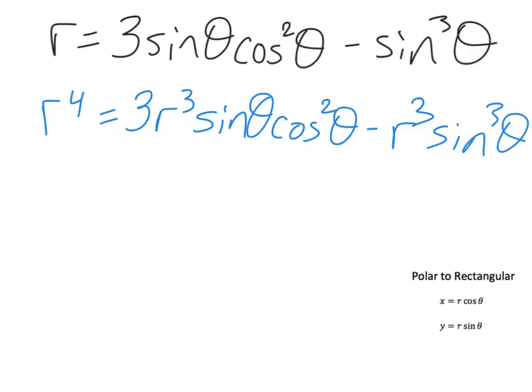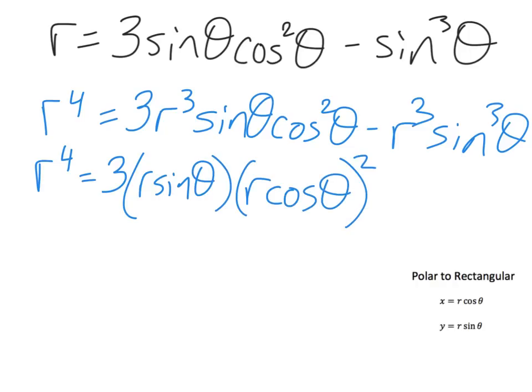So I'm going to multiply every term by r cubed, which gives me r to the fourth is equal to 3 r cubed sine theta cosine squared theta minus r cubed sine sine theta. So rearranging this, I have 3 times r sine times, this becomes an r cosine where the whole thing is getting squared, and this is an r sine where the whole thing is getting cubed.